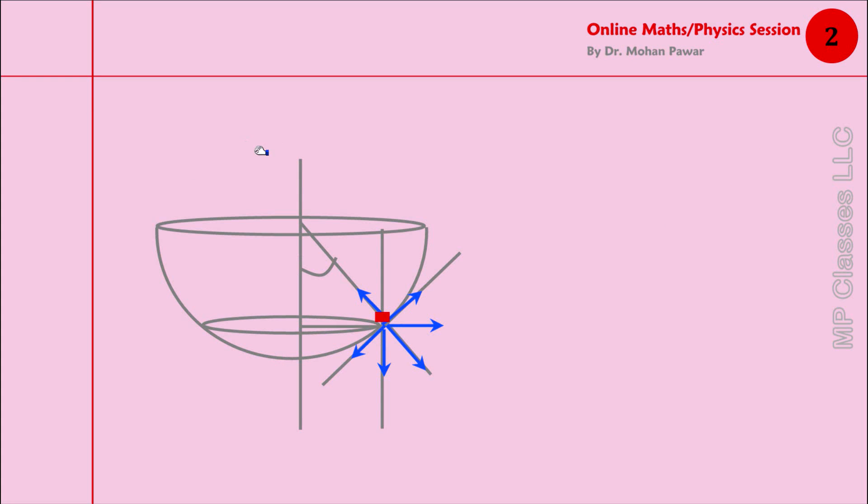We have some of the things that we already marked: theta was marked here, this was R, and therefore this radius is going to be R sin θ in which the mass is revolving.